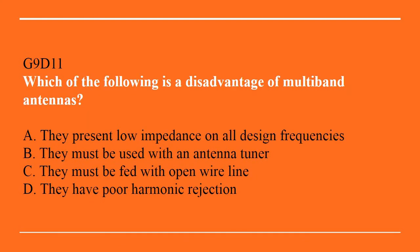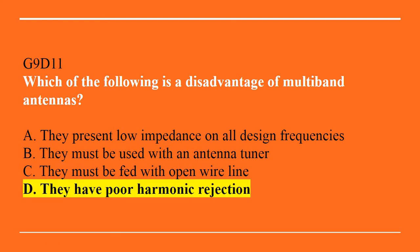G9D11: Which of the following is a disadvantage of multiband antennas? A. They present low impedance on all design frequencies. B. They must be used with an antenna tuner. C. They must be fed with open wire line. Or D. They have poor harmonic rejection. The answer is D, they have poor harmonic rejection.